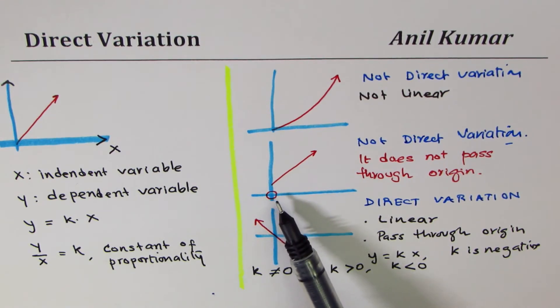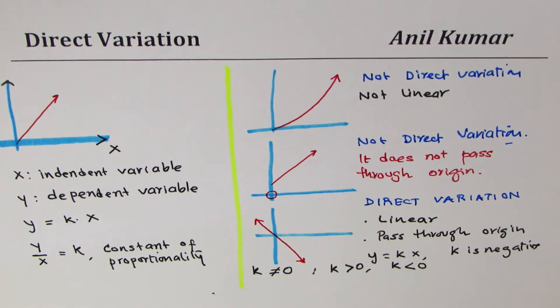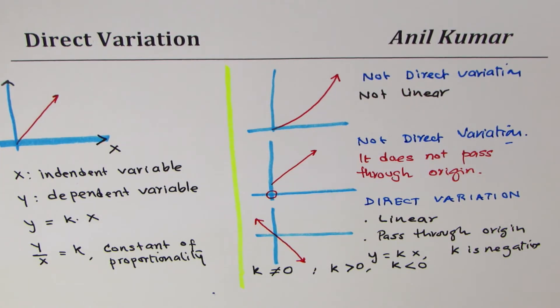Any graph which has a curved line cannot be direct variation graph and a graph which starts from somewhere else rather than the origin or which does not pass through origin will not represent direct variation. So in this video we have learned how to identify direct variation.